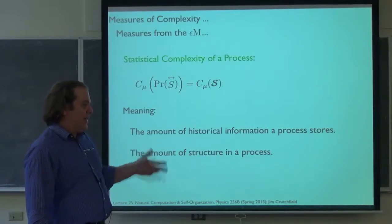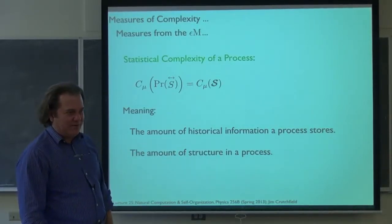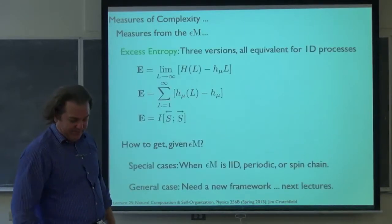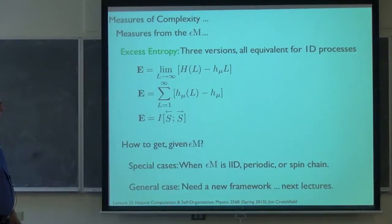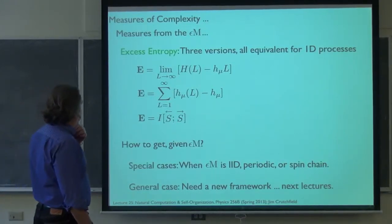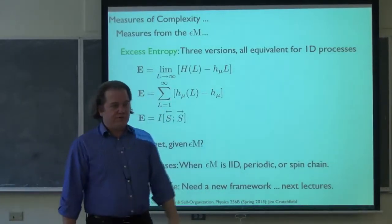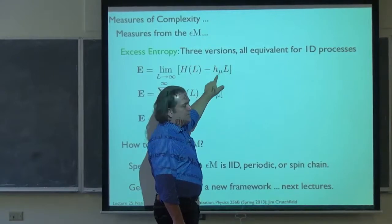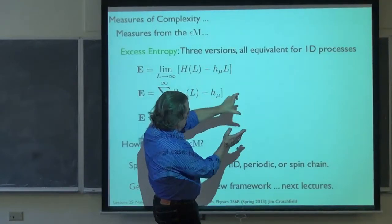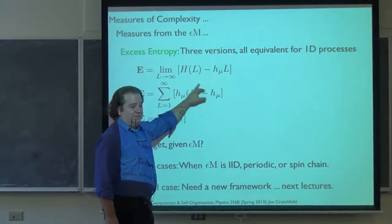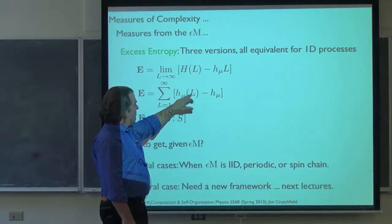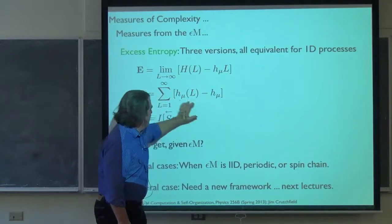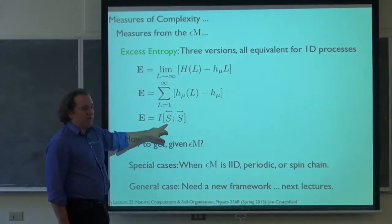What we mean by structure, organization, regularity — we have a lot of historical baggage in what we think that means. By having this explicit representation we can start to explore those meanings. One of the measures we used a lot in the information theory was the excess entropy. We had three different definitions: we compared the block entropy of our process to a memoryless process with the same entropy rate, and the block entropy curve is the distance between those. We had a convergence definition. And the most intuitive one was the mutual information between past and future.